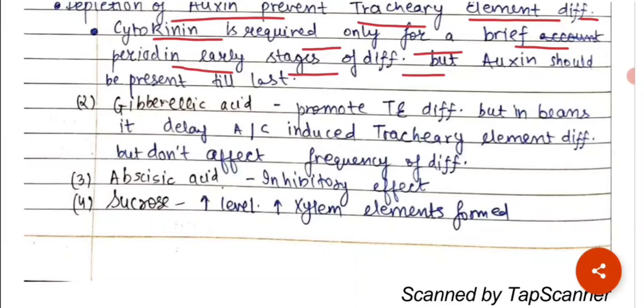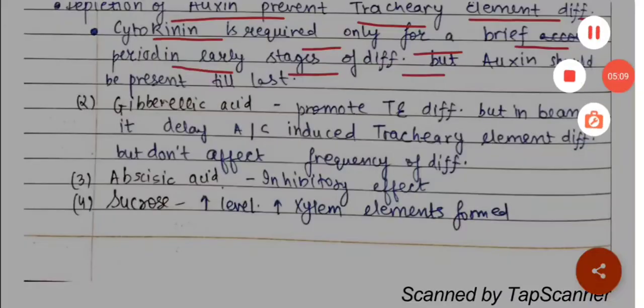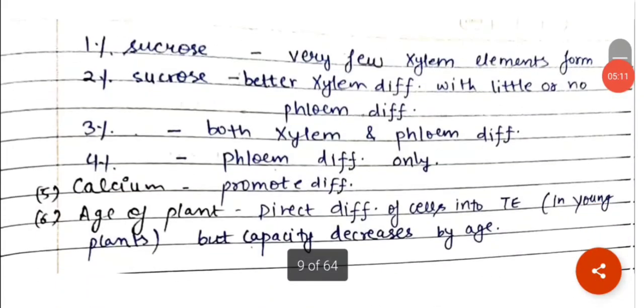Sucrose: high level of sucrose means high level of xylem elements are formed. It basically supports. 1% sucrose means very few xylem elements form. 2% sucrose means better xylem differentiation with little or no phloem differentiation. 3% sucrose in your medium means both xylem and phloem differentiation. 4% sucrose in your medium, then the phloem differentiation only.